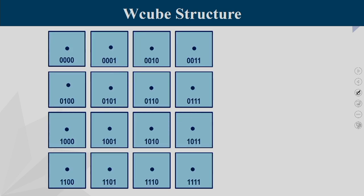Each W-cube can be represented as W-cube 00, W-cube 01, 10, and so on. That is the numbering scheme for W-cubes. Each W-cube has its own transmitters and receivers.